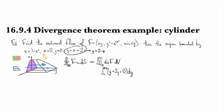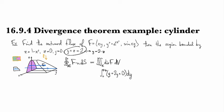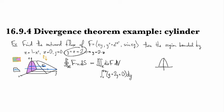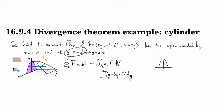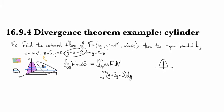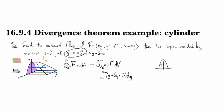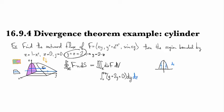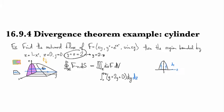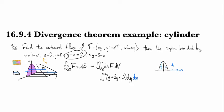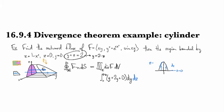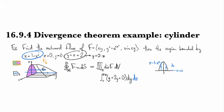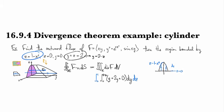Now we have to figure out how to set up this region. We'll go vertically, so that's dz next. This goes from z equals 0 up to the parabola, which is z equals 1 minus x squared. So we're going from 0 to 1 minus x squared.